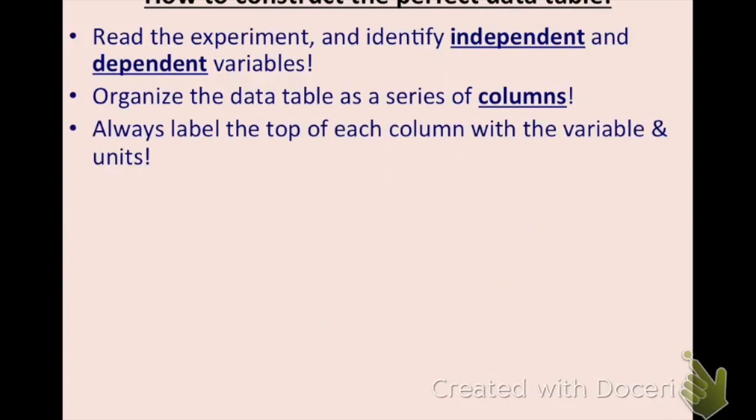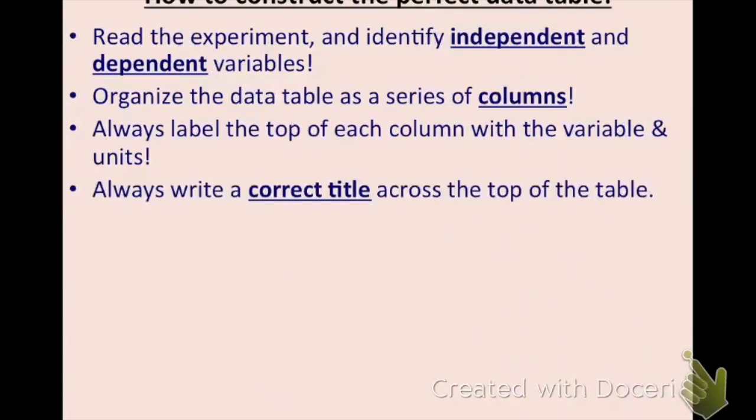How to construct the perfect data table. First, make sure you know your experiment. Read the experiment and identify the independent and dependent variables. You always need to know what your independent and dependent variables are first. Organize the data table as a series of columns. Always label the top of each column with the variable and the units. Do not forget units. You will get points taken off. Always write a correct title across the top of the table. Data table is not a correct title.